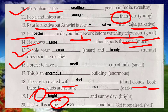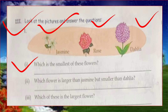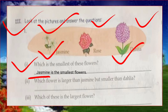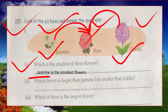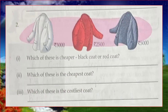Now look at pictures of three flowers — jasmine, rose, and dahlia — and answer questions. Which is the smallest? Jasmine is the smallest of these flowers. Which flower is larger than jasmine but smaller than the dahlia? The rose is larger than jasmine but smaller than the dahlia. Which is the largest flower? The dahlia is the largest among all flowers.